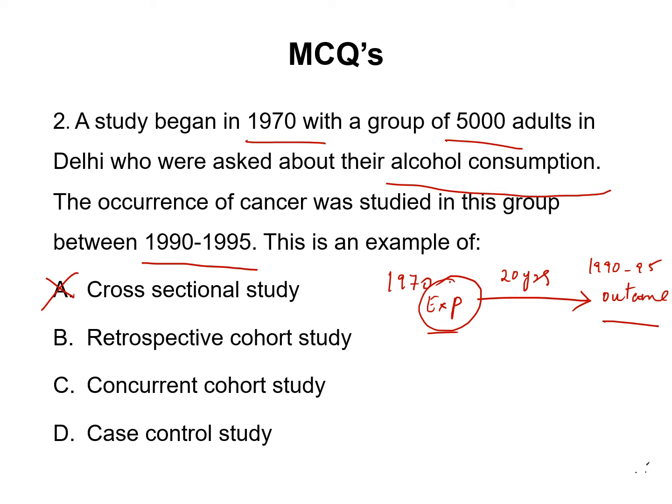Can this be a case control study? No. The first reason is this study is moving forward in time from cause to effect, whereas in a case control study it is a backward-looking study which moves from effect to cause — from outcome to exposure, from disease to the risk factor. So this is not a case control study.